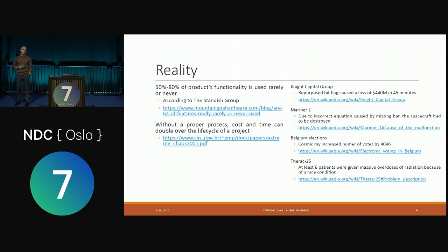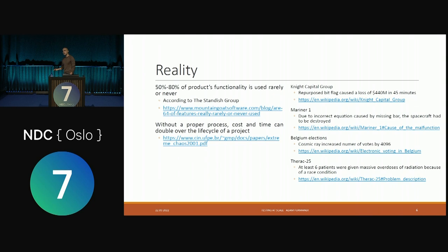But on the other hand, there are serious scenarios leading to severe issues when applications were not tested. One example is Knight Capital Group — a stock trading company that reused one bit flag when deploying a new version of their software. That bit flag was reused in two different scenarios, deployment failed in the middle, they had split brain in their cluster, and this resulted in losing 440 million US dollars in less than one hour. The company was almost out of business.